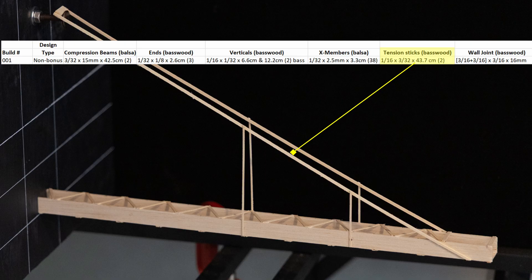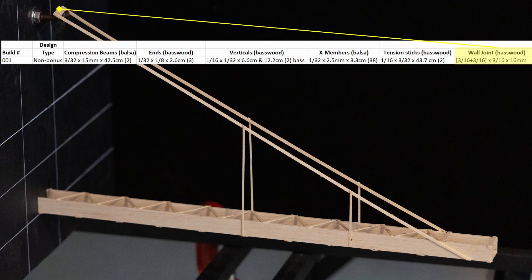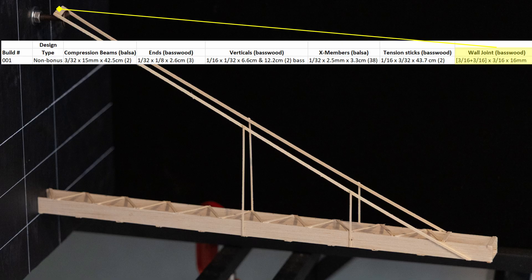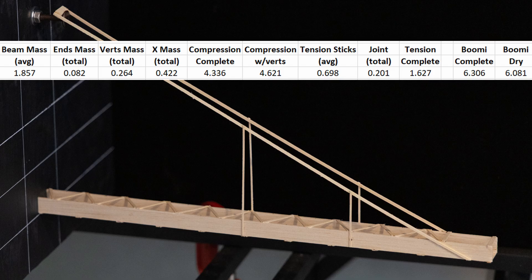Finally, the tension sticks were 1/16 by 3/32 basswood at 43.7 cm. The wall bolt joint was made from combining two pieces of 3/16 by 3/16 basswood cut to 16 mm. Here you can see the total mass of all the different components if you'd like to take a closer look and study the details. The completed boomy after coming out of my dry box weighed 6.081 grams, so very much in line with my initial mass target.